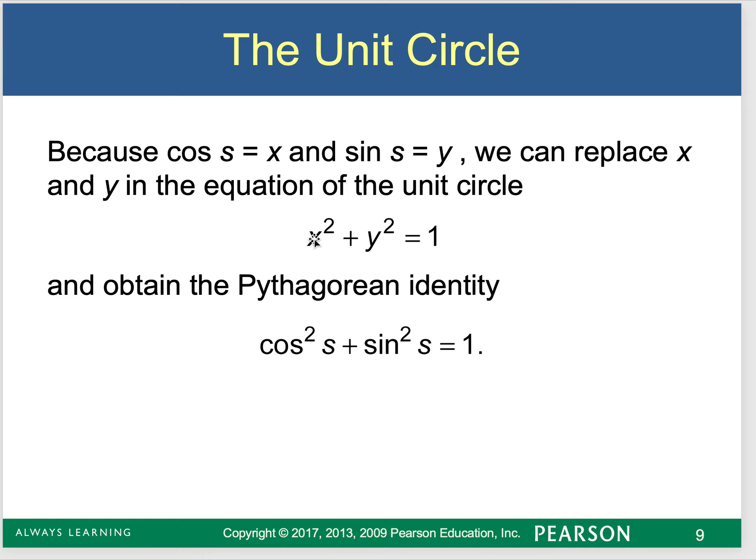Now is a great time to point out this is because we said that cosine is the x value, which is really x divided by the radius, the radius is 1 though. Sine is the y value divided by the radius, but the radius is 1. So these two statements are equivalent statements.